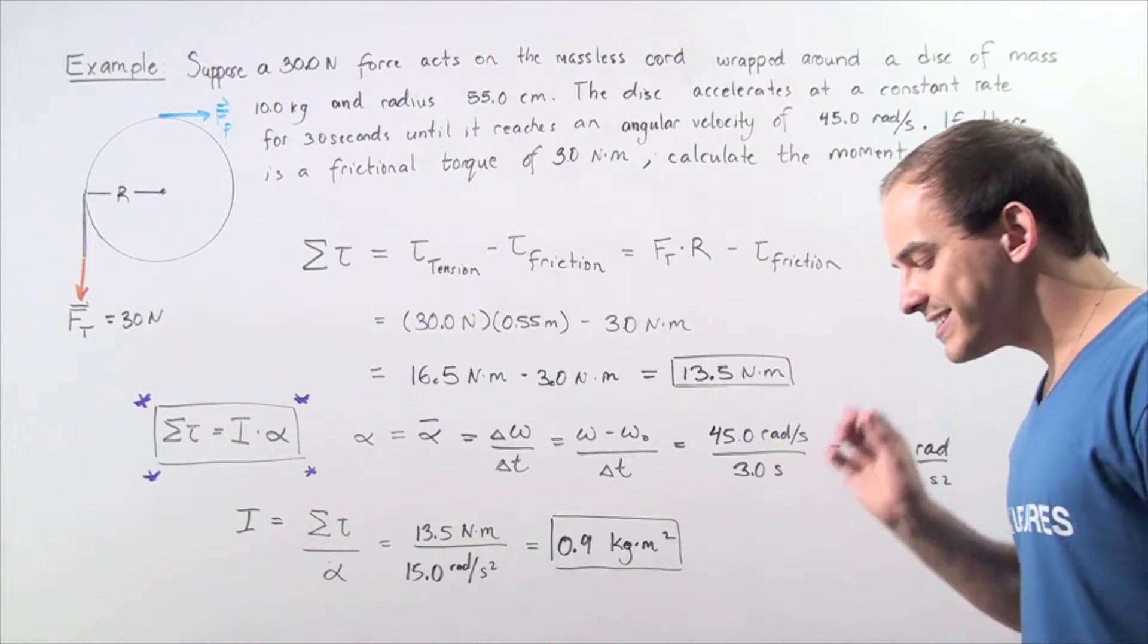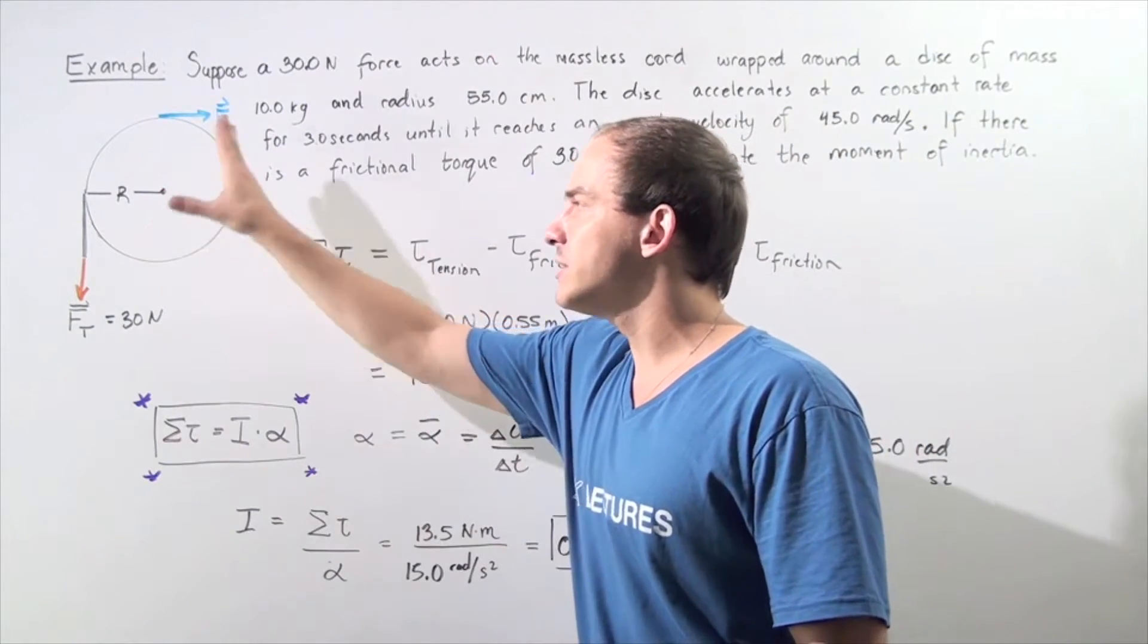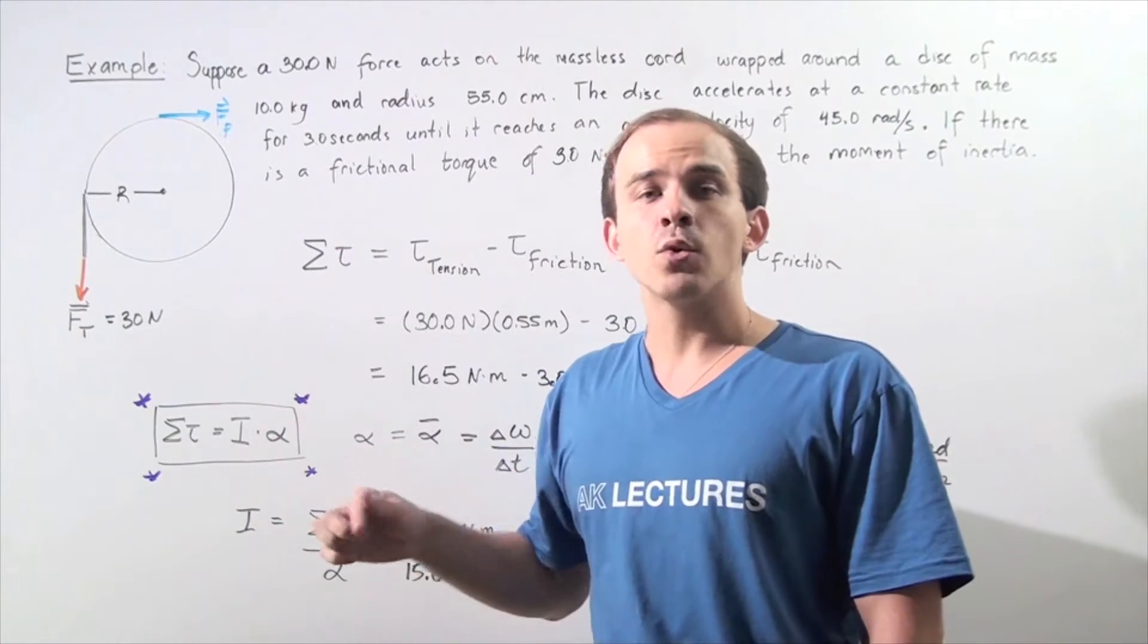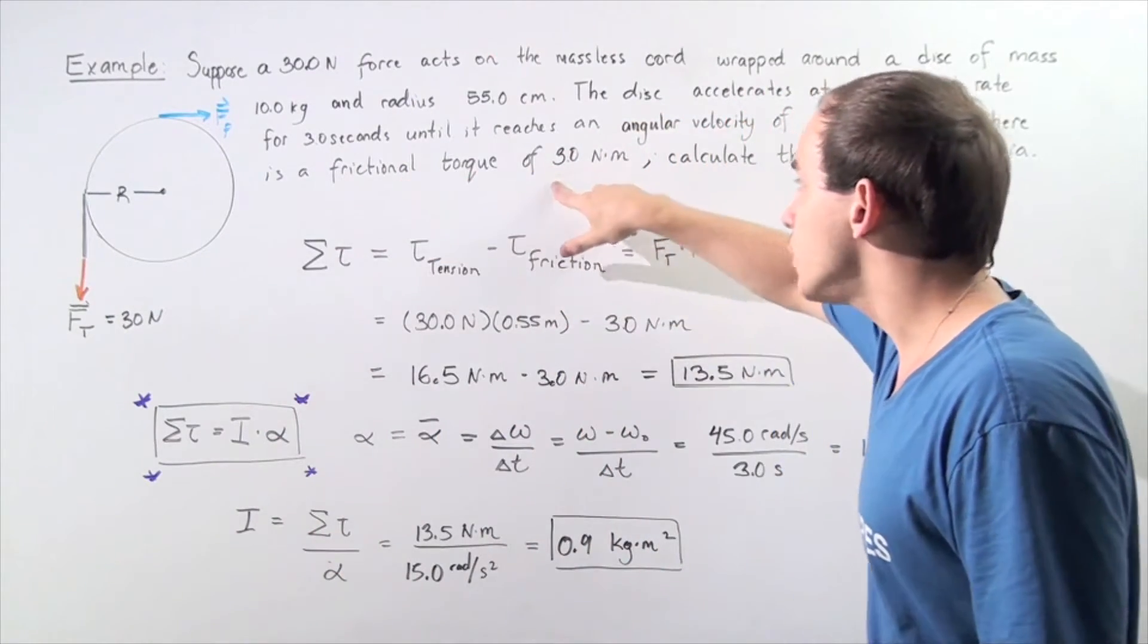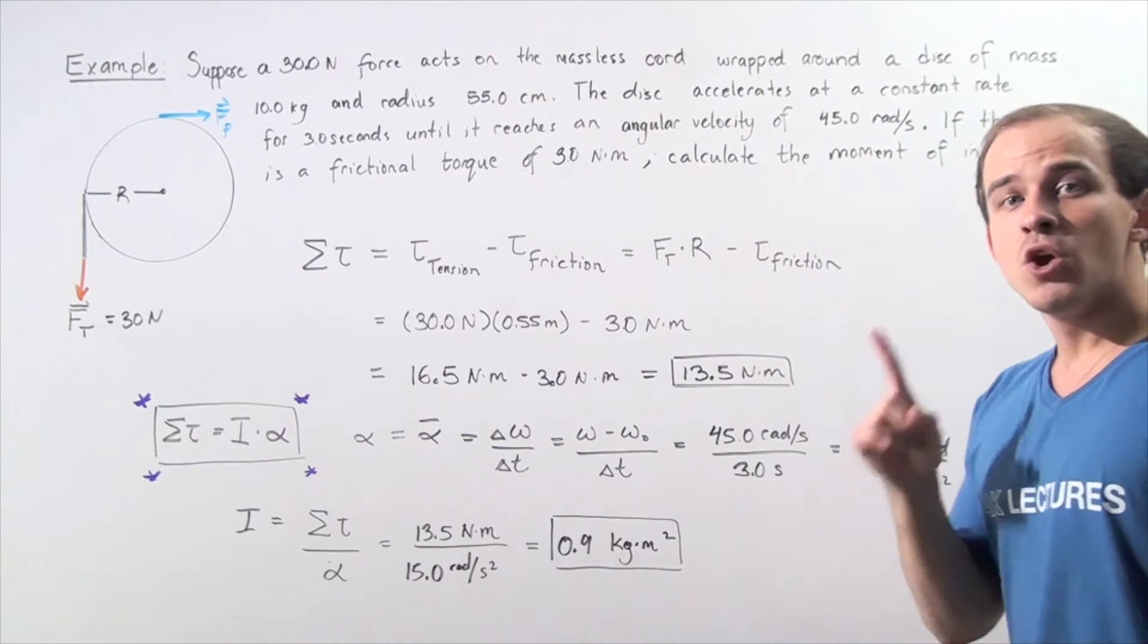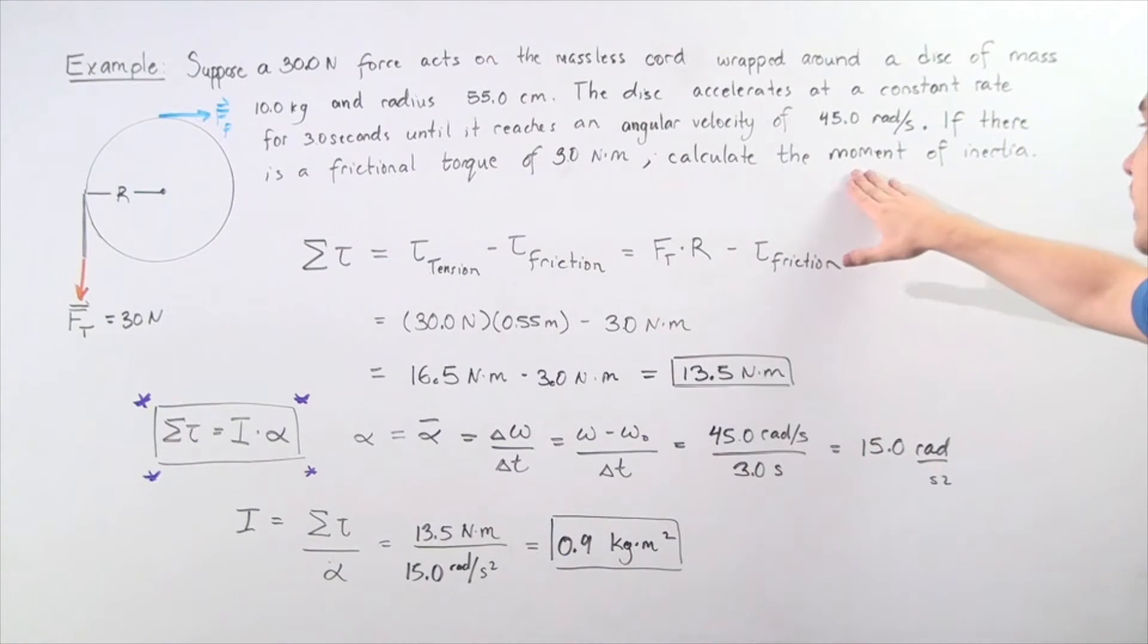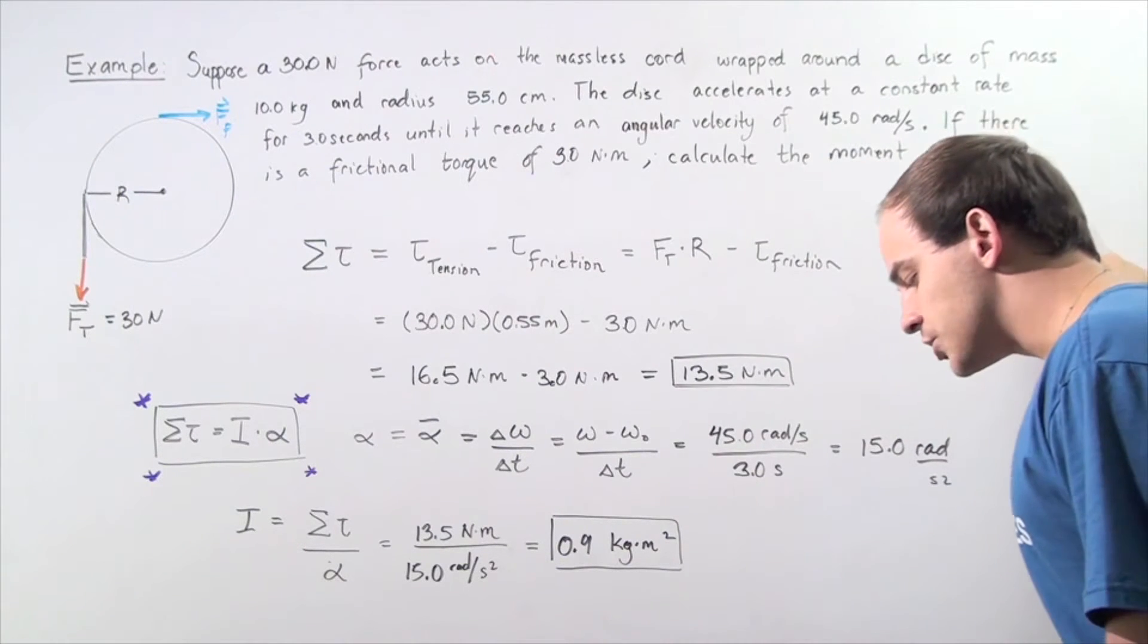If there exists a frictional force inside the disc that opposes the rotation and creates a frictional torque of 3 Newton-meters, we want to calculate the moment of inertia of the rotating object, also known as rotational inertia.